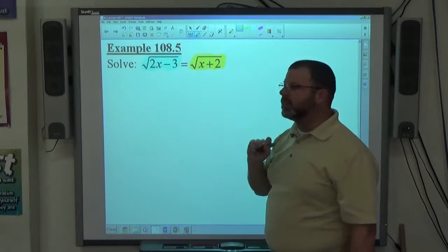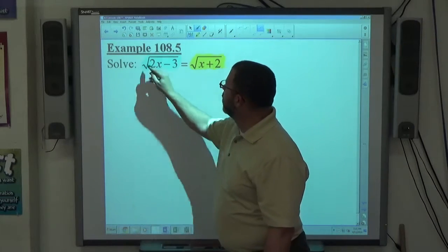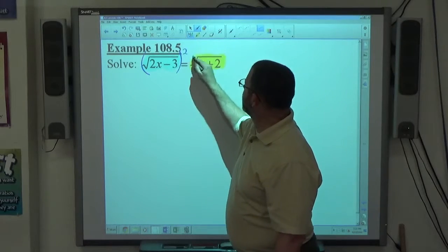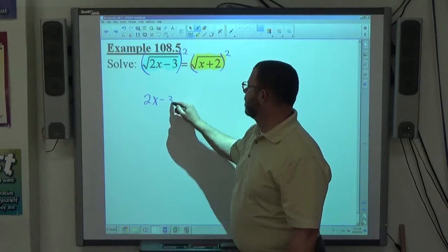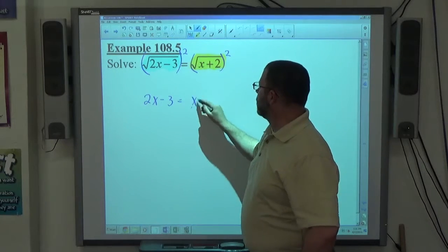If you have that exact structure, all you have to do is square both sides. So if I square this side and square this side, the square root squared just gives me what's underneath. The square root squared just gives me what's underneath.